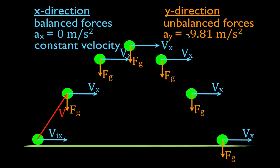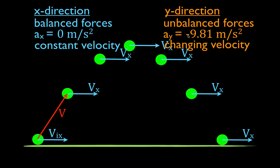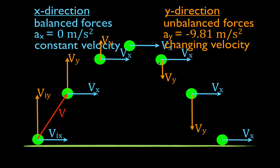It's a constant acceleration, and therefore the object is changing its velocity. There is some initial velocity in the y direction. As the object goes up, it slows down — each velocity vector gets a little smaller — and when it reaches the top of its path, it has no velocity in the y direction. The velocity in the y direction at the top is zero. Then the velocity starts to increase in the negative direction: these going up are positive, coming down is negative, and it speeds up as it comes back down.